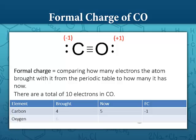Whereas oxygen brought from the table six valence electrons and now is surrounded by five, the lone pair and the three bonds. So that's why it has a plus one formal charge because it actually now has fewer electrons than what it brought.